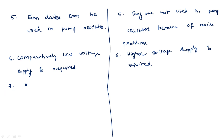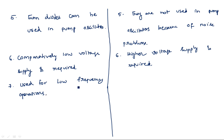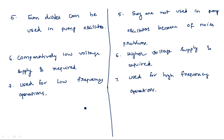Seventh difference: Gunn diodes are used for low frequency operations. Among microwave components, the Gunn diode has low frequency as well as low power. IMPATT diodes are used for high frequency operations.